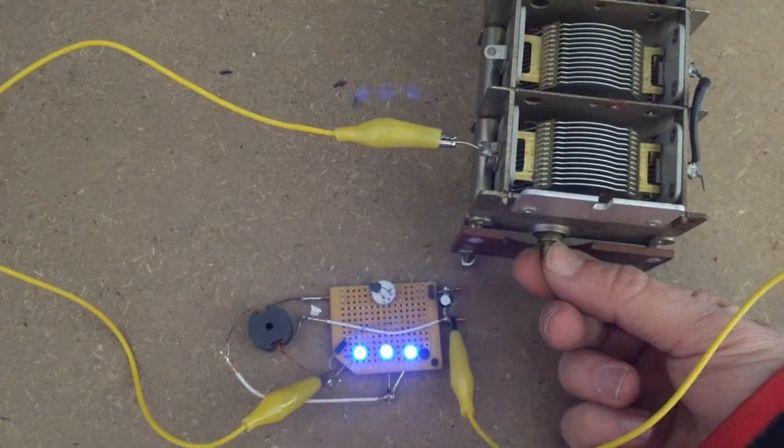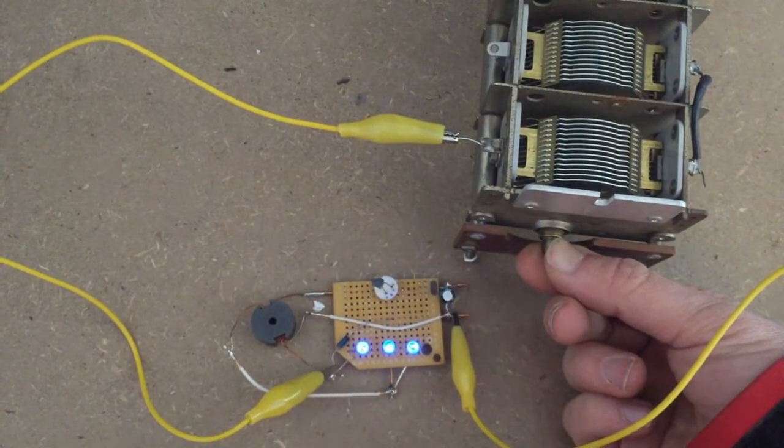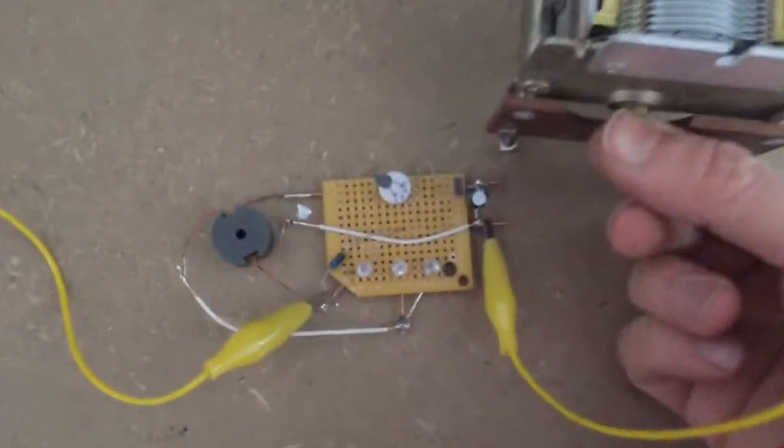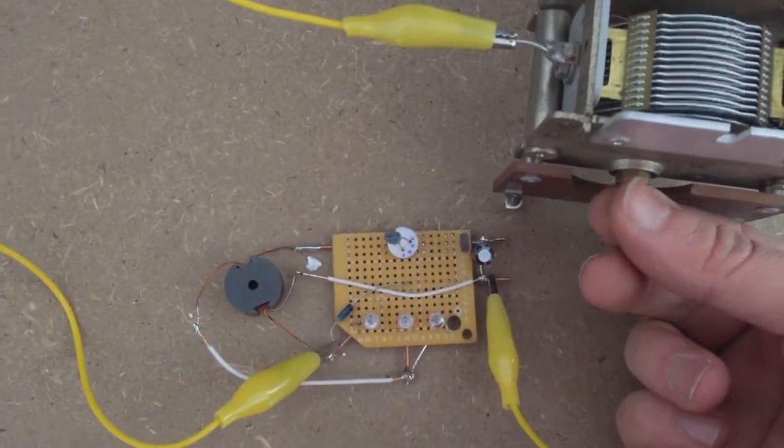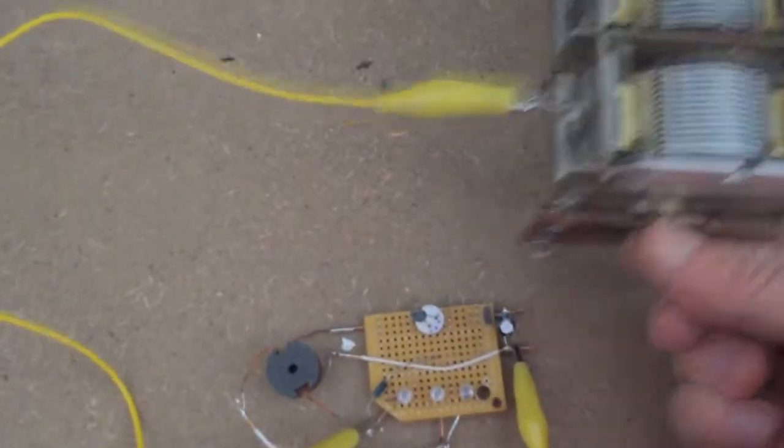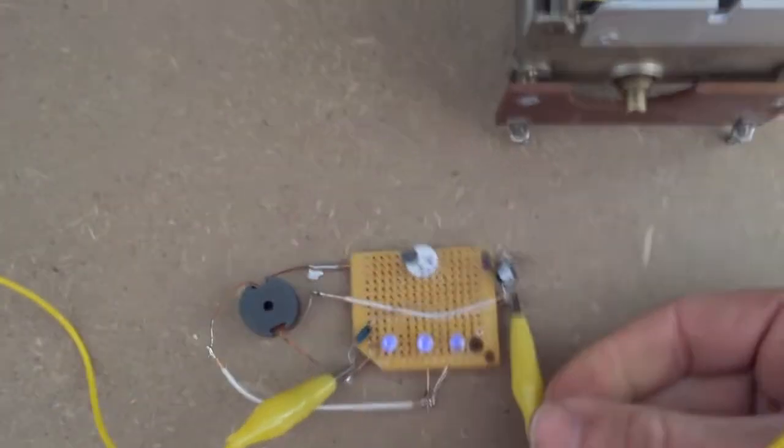What I really want to show is as I adjust the variable air capacitor here, you can see the lights flash and get really bright. If I bring it up all the way I pretty much just suck the circuit dry, but if I lower it back down you can see them come back on very dimly.